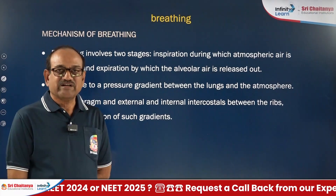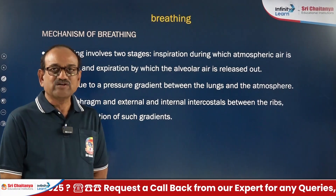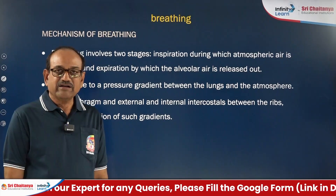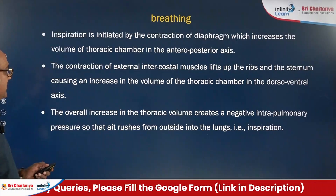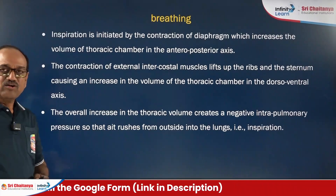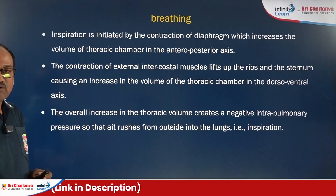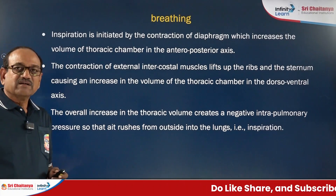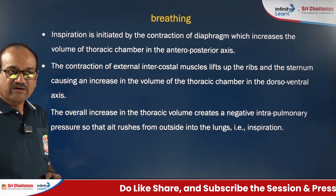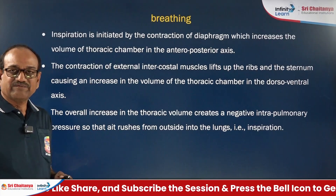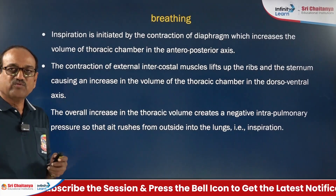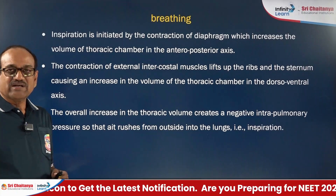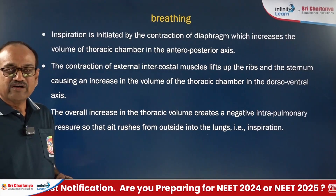Respiratory muscles include the diaphragm and intercostal muscles. Intercostal muscles are extended between the ribs and are of two kinds: external intercostals and internal intercostal muscles. When the diaphragm contracts, the thoracic volume increases in the anterior-posterior direction. When the external intercostal muscles contract, the entire rib cage is lifted upward, the sternum moves upward, and ribs also move upward, increasing the thoracic cavity in the dorsal-ventral axis.